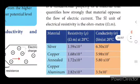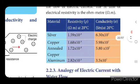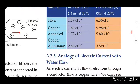A table of resistivity and conductivity values is given for various materials — for example, silver, gold, annealed copper, aluminium. All these are metals, and their resistivity and conductivity values are given.